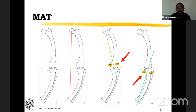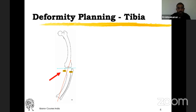You look for the tibial deformity. The medial proximal tibial angle MPTA is 70 degrees. So you have a deformity in the femur as well as the tibia. Malalignment test is up to this step: you find out the mechanical axis deviation, then whether there is a femoral or tibial deformity. In this particular case, you have a deformity of both the femur and the tibia.